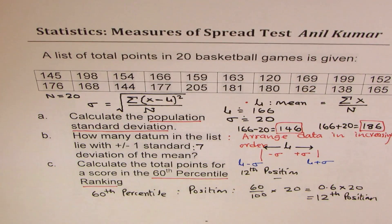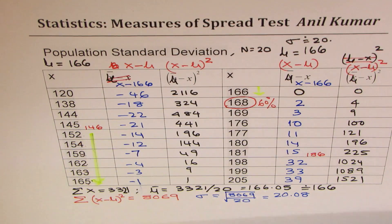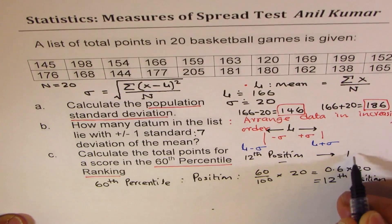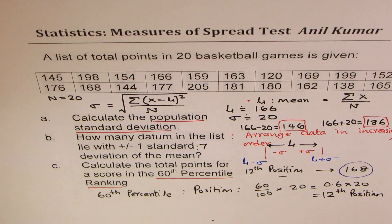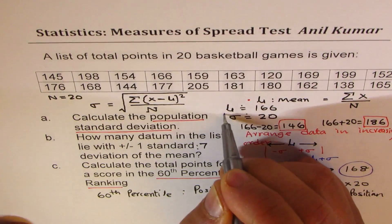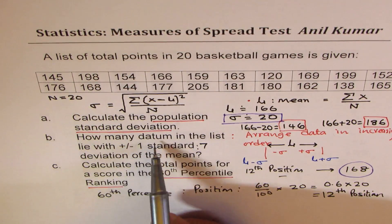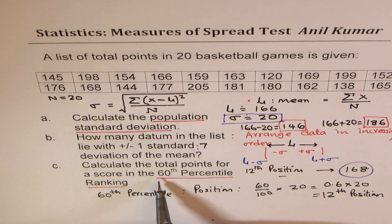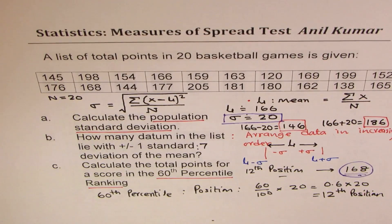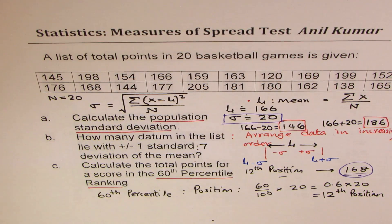And the position we found for the 60th percentile was 12th, which was 168. So this answer is 168. That is how we could answer this kind of question. Let me just highlight these answers for you. What we got here is a mean of 166, standard deviation of 20. How many datums in the list are 7 - they are from 146 to 186, we just counted them. And calculate the point score for 60th percentile, which was the 12th element, 168. I hope it is clear how to solve such questions. Feel free to post your suggestions. If you like and subscribe, that would be great. Also look into the other questions from this test paper so that you are well prepared for your own test. Thanks for watching and all the best.